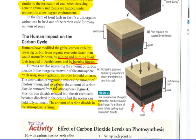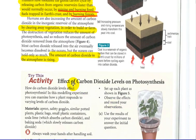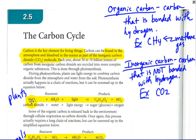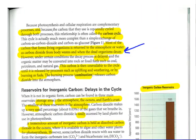The destruction of vegetation reduces the amount of photosynthesis and so reduces the amount of carbon dioxide removed from the atmosphere. Most carbon dioxide released into the air eventually becomes dissolved in the oceans, but the oceans can only hold so much. The amount of carbon dioxide in the atmosphere is rising. Because if we clear vegetation, this process is not able to occur. And it's going to limit the amount of oxygen being produced as well.